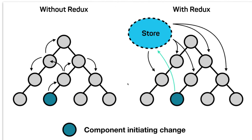In the coming set of videos we will talk about two different approaches. First is using useContext — useContext is the hook name for functional components, while the Context API is for class-based components, but both do the same thing. The other is Redux, which is most popular for managing state. We'll also see how to combine useContext and useReducer hooks for functional components, which gives a lot of relief in managing component-level state.